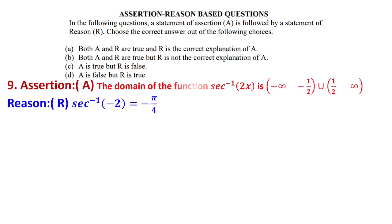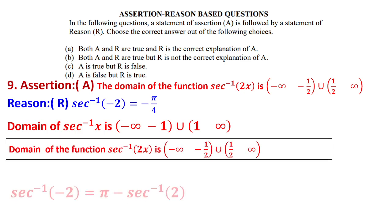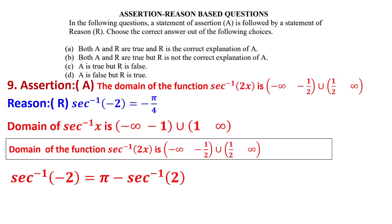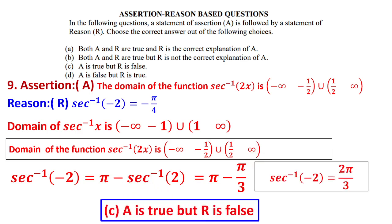Question number 9 is an assertion and reasoning question. The assertion gives the domain of a function and the reason is also given. When handling assertion-reason questions, first check whether the assertion is true or false. The assertion: domain of sec inverse(2x) is (-∞, -1/2] ∪ [1/2, ∞). Since domain of sec inverse(x) is (-∞,-1] ∪ [1,∞), the domain of sec inverse(2x) is indeed (-∞,-1/2] ∪ [1/2,∞). Assertion is true. The reason states sec inverse(-2) = π minus sec inverse(2) = 2π/3, not minus π/4. So reason is false. Answer: A is true but R is false.